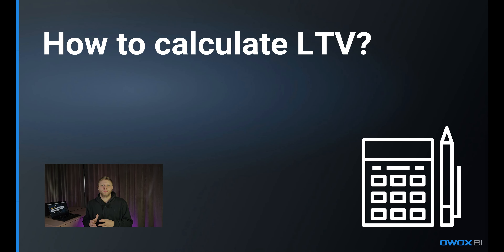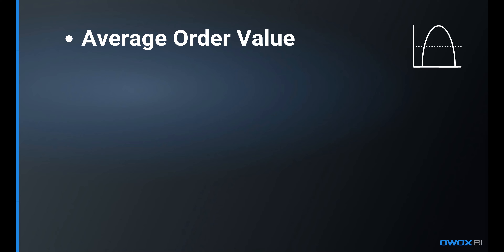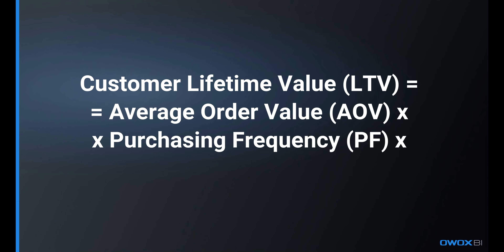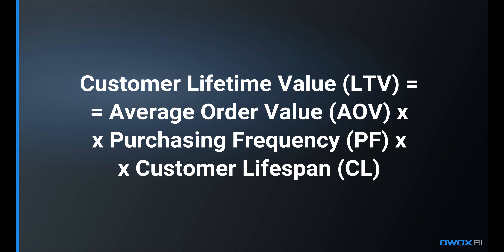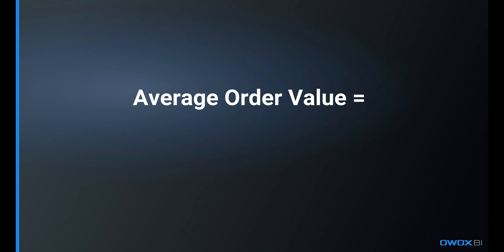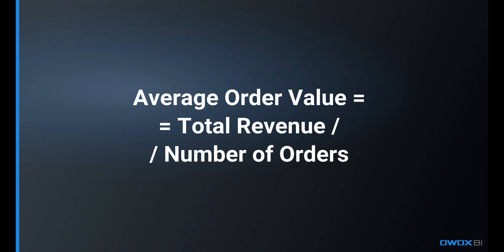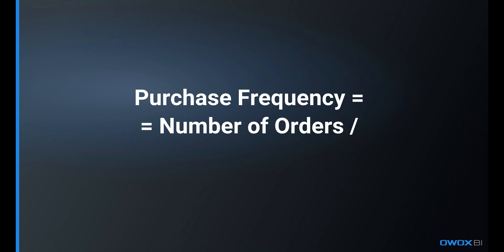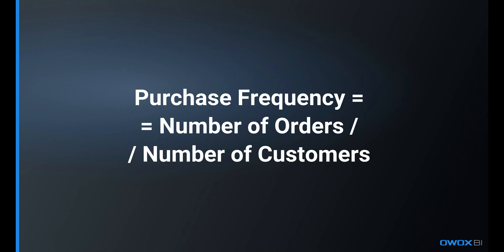Moving on, let's tackle the heart of the matter: how to calculate customer lifetime value. At its core, the formula for LTV is very simple – it's the magic trifecta of average order value, purchase frequency, and the customer lifespan. LTV equals the average order value multiplied by purchase frequency, then multiplied by the customer's lifespan. Here's how it breaks down. Average order value: divide your total revenue over a specific period, let's say a year or at least a few months, by the number of orders in that period. This gives you the average amount spent each time a customer makes a purchase. Purchase frequency: calculate how often an average customer buys from you in the same period – divide the number of orders by the number of customers who made those orders.